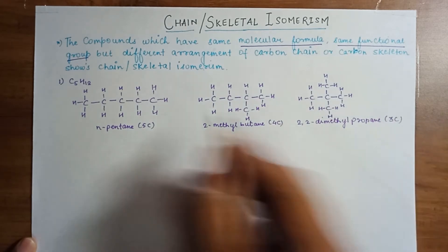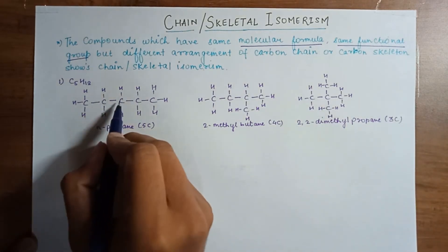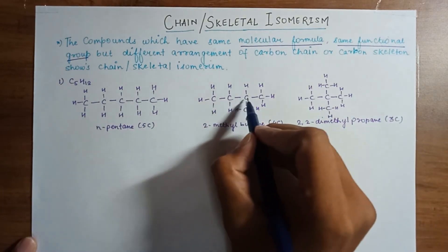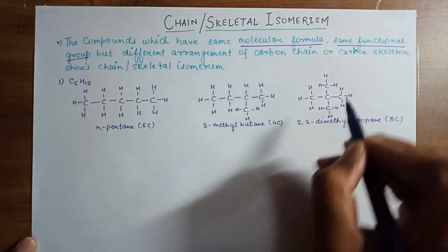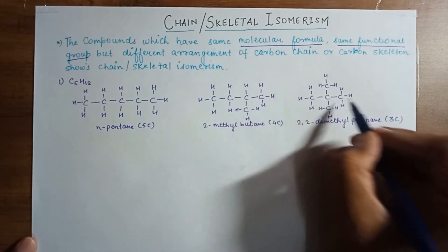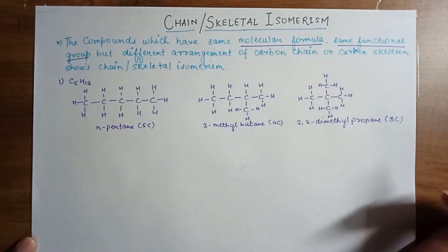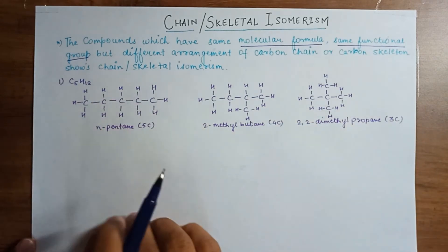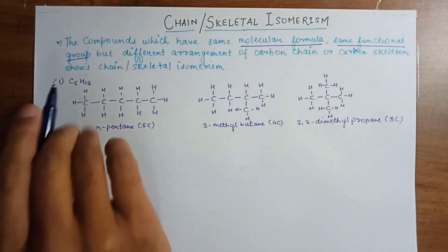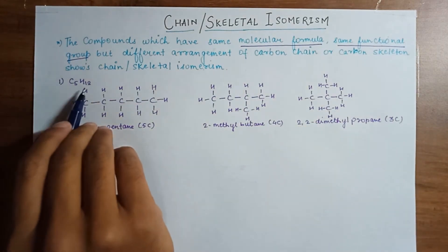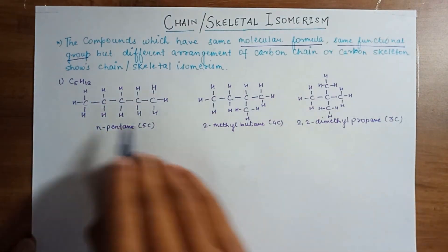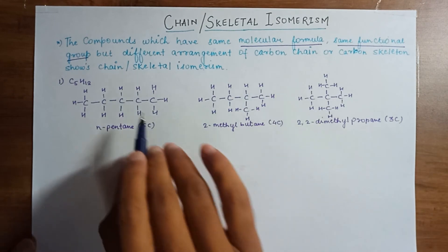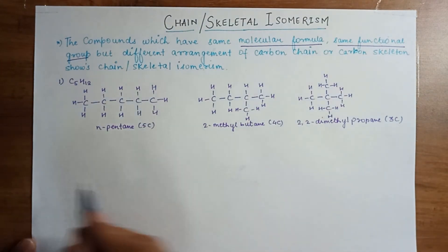Here you can see the 5-carbon chain, the 4-carbon chain, and the 3-carbon chain. So these three are the chain isomers for the compound C5H12. You can see that the carbon skeleton is changing in each case.